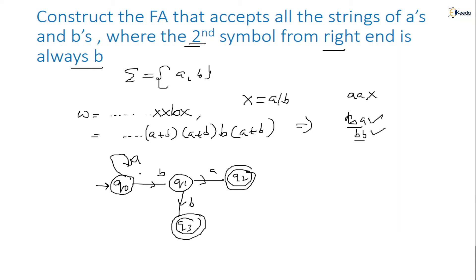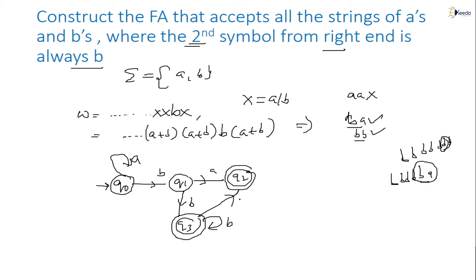When q0 starts with b, any number of a's can follow. After any number of b's, the second symbol is always b — so 1b, 2b, 3b, n number of b's, it keeps repeating. After any number of b's, if an a comes, that must also be accepted, because the second symbol from the right is still b. So if a comes I send it to the final state q2.